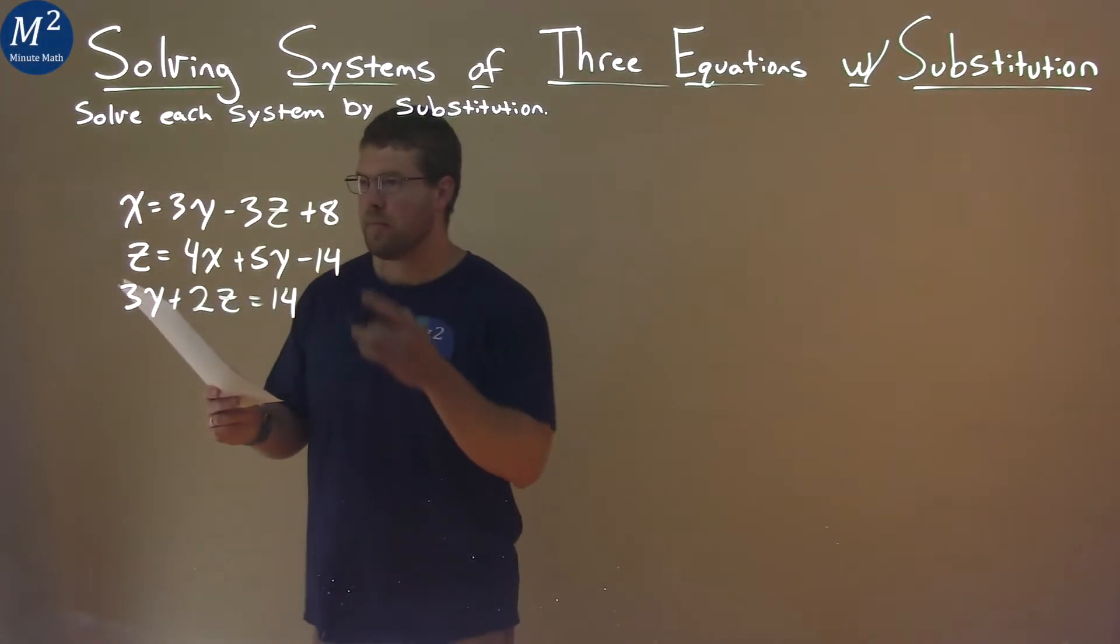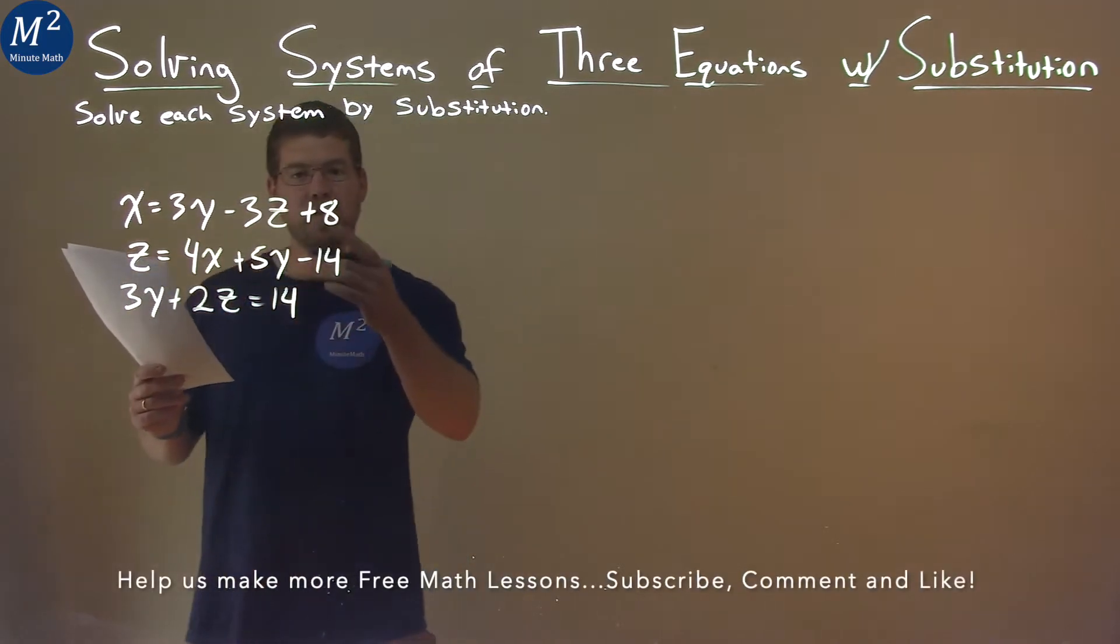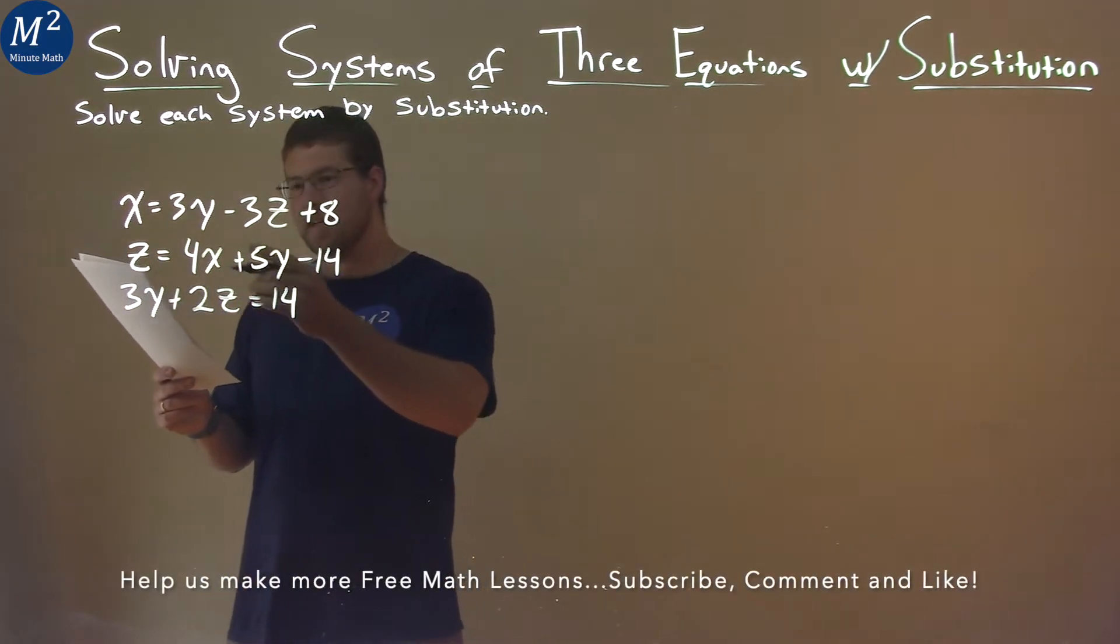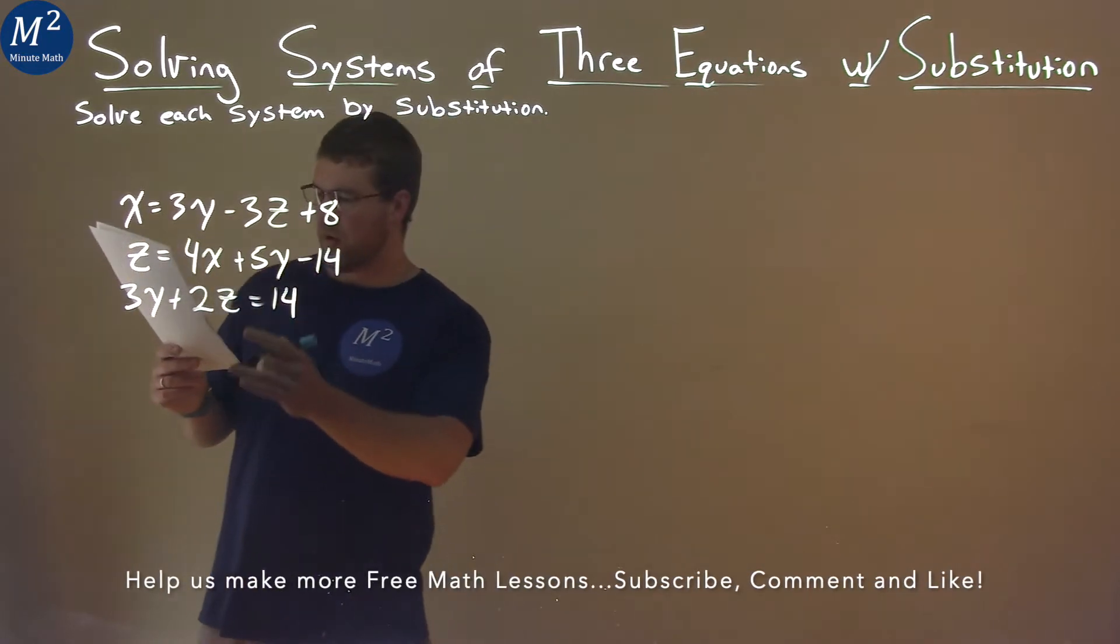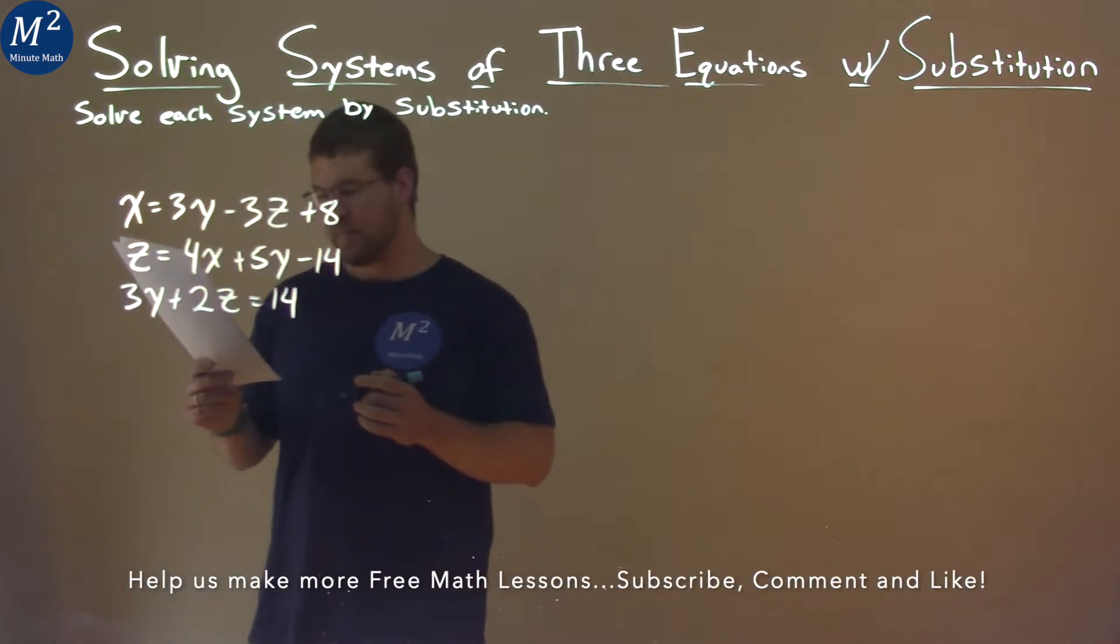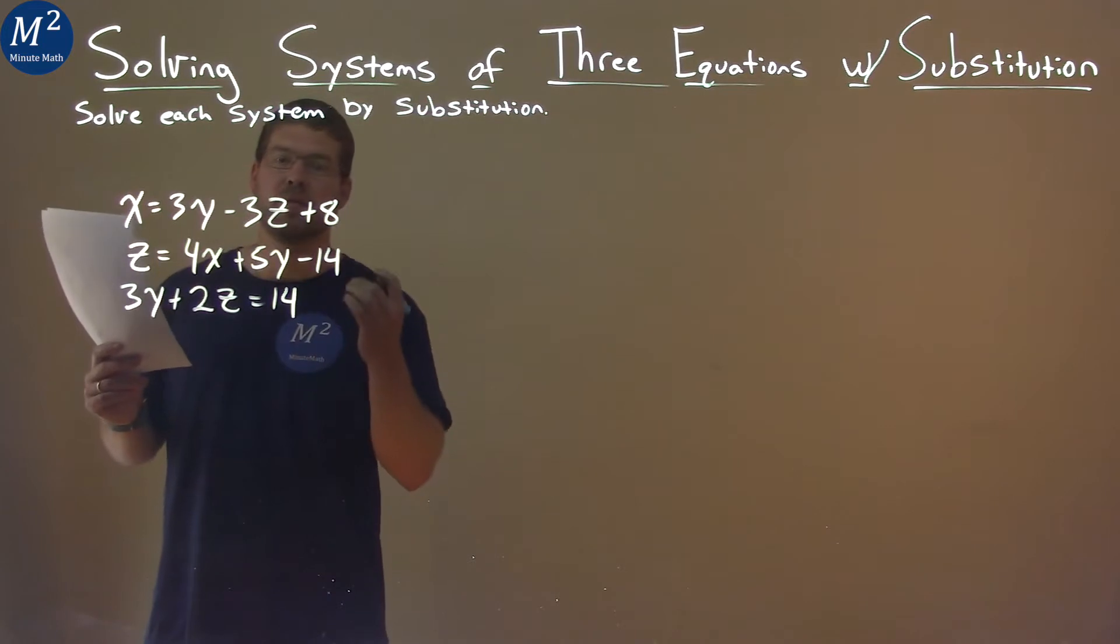We're given this problem right here. x equals 3y minus 3z plus 8, z equals 4x plus 5y minus 14, and 3y plus 2z equals 14, and we want to solve the system by substitution.